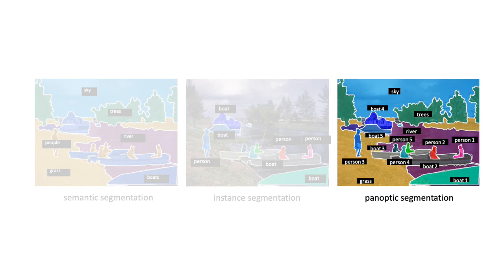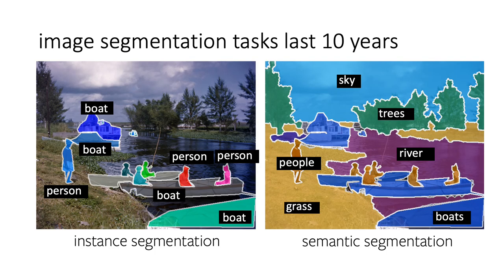Next, I'll move to panoptic segmentation, the task formulation that combines instance and semantic segmentation. While instance segmentation focuses only on countable objects with a notion of instances, semantic segmentation often uses a wider set of labels including stuff categories like sky, water, or grass — assigning labels to all pixels but without splitting different objects of the same class. For someone outside our community, it might seem strange that these two tasks are considered separate, but they have different histories, different approaches, different datasets, and different metrics.